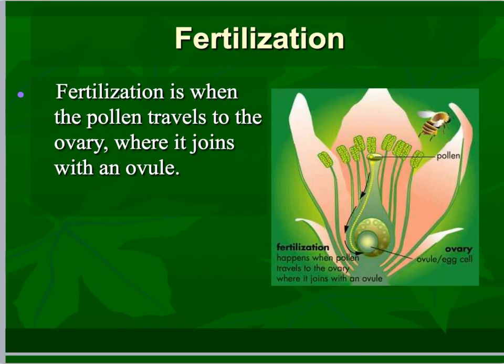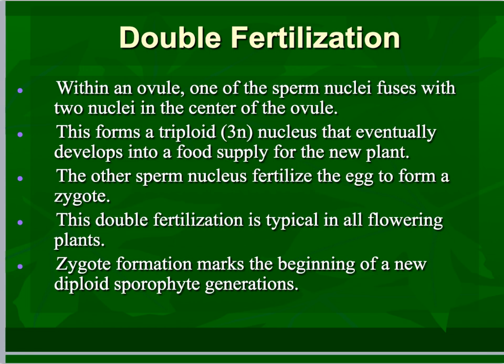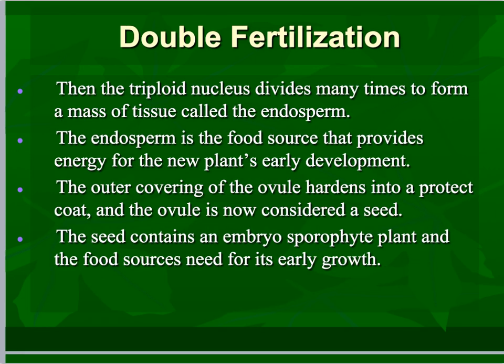Fertilization is when the egg actually becomes fertilized after pollination. You're going to have double fertilization — make sure you know this. Fruits will create a double fertilization. The fruit itself forms from the endosperm and is triploid, meaning it has 3N. So if a haploid has 21 chromosomes, a diploid has 42, the endosperm will have 63.